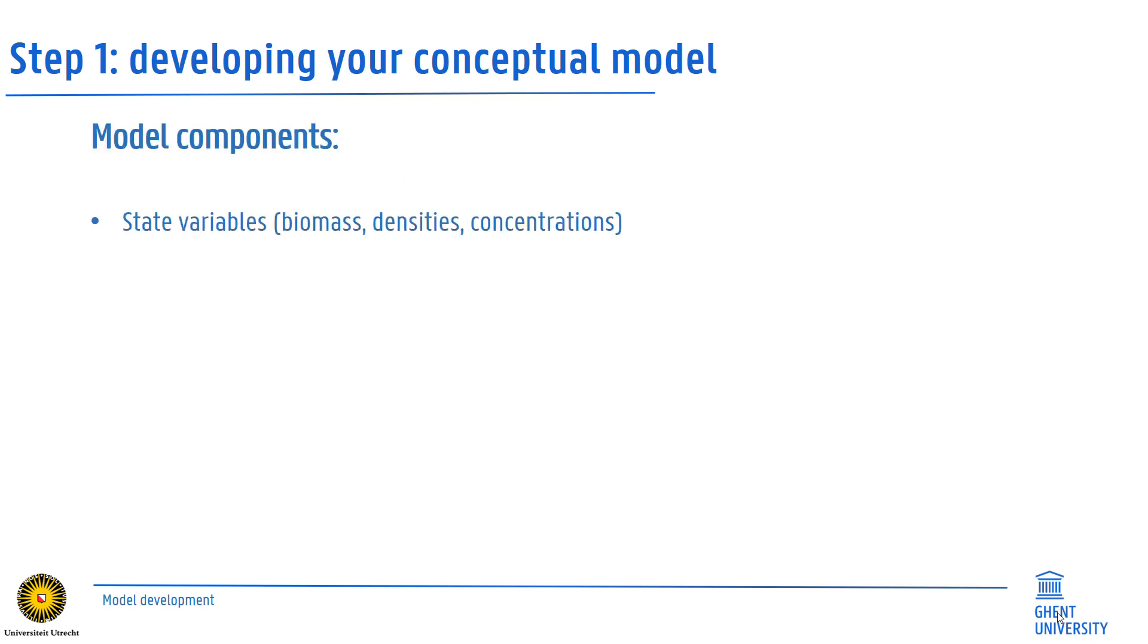First, let me introduce the different model components and how to visualize them into a scheme. State variables, for instance biomass or densities of certain species or other ecosystem components, are typically depicted in rectangles.